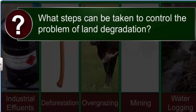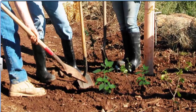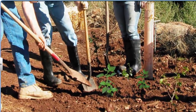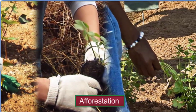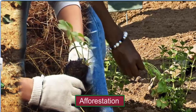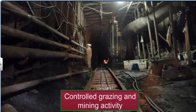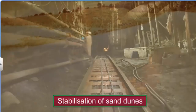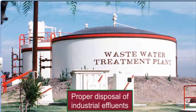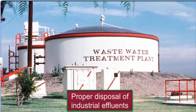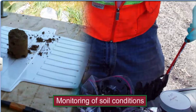What steps can be taken to control the problem of land degradation? The solution lies in land conservation. Some steps include afforestation, controlled grazing and mining activity, stabilization of sand dunes by growing thorny bushes, proper disposal of industrial effluents after treatment, and continuous monitoring of soil conditions.